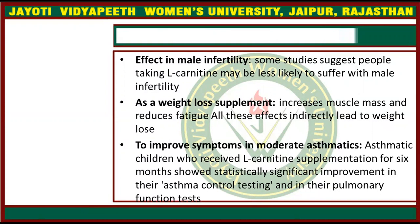The last function is to improve the symptoms of moderate asthma. If you have asthma — breathing problems, lung problems — asthmatic children who took Carnitine supplements for six months showed improved asthma control. Their pulmonary function, meaning their lung functioning, improved. In some studies this has been proven, and many children who regularly used L-Carnitine as supplementation showed improvement in their asthmatic condition.